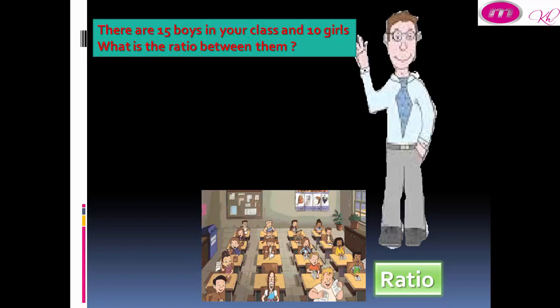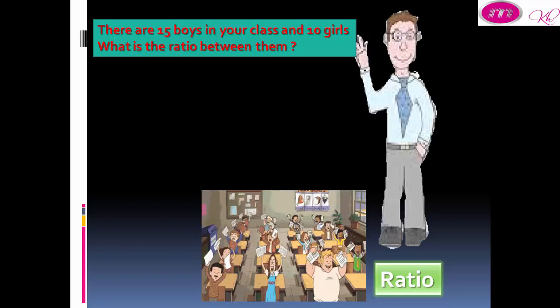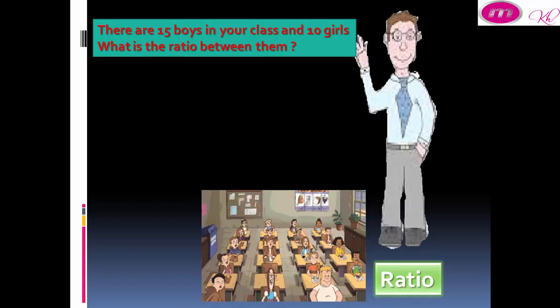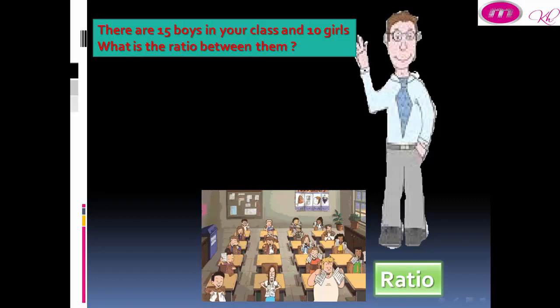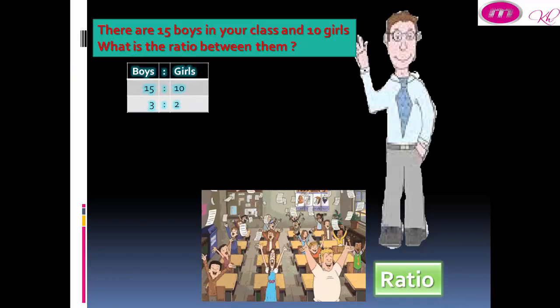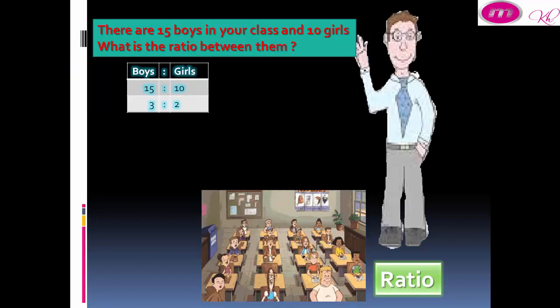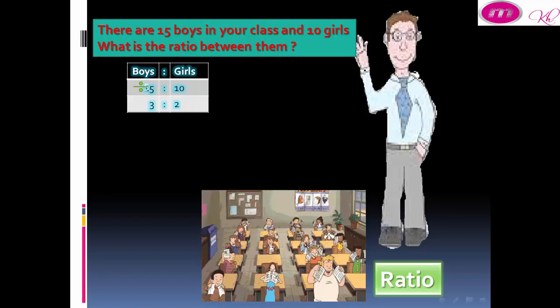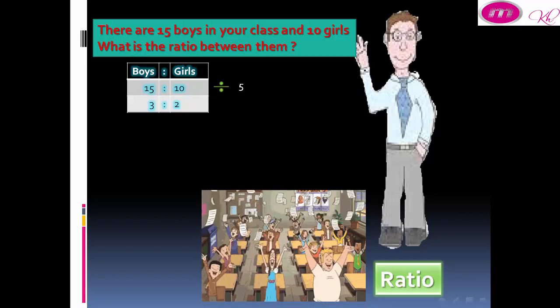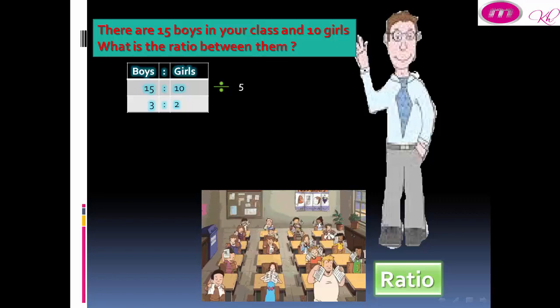There are 15 boys in your class and 10 girls. What is the ratio between them? Boys to girls: 15 to 10, divided by 5, equals 3 to 2.